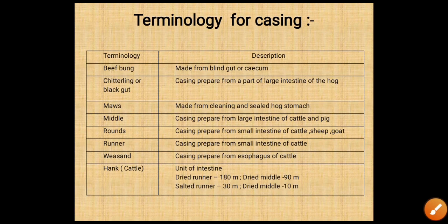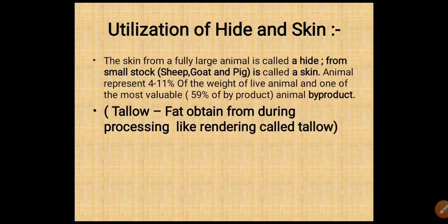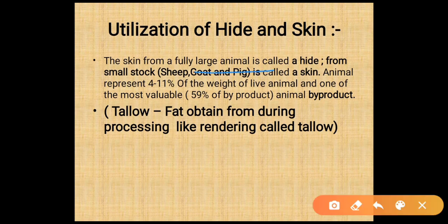Many exam questions are asked about which casing is prepared from which part, so please study this topic carefully. Utilization of hide and skin: skin from fully large animals is called hide, and from small stock like sheep, goat, and pig it is called skin. Animals represent about 4 to 11% of the weight of the live animal.